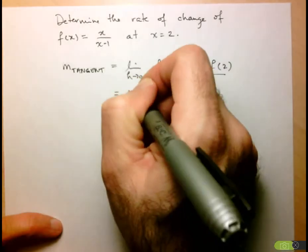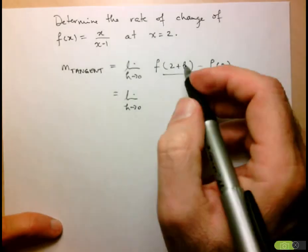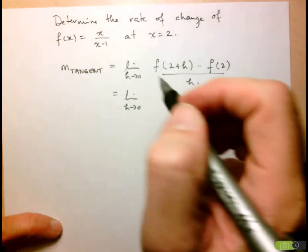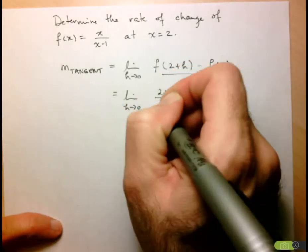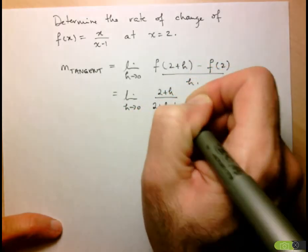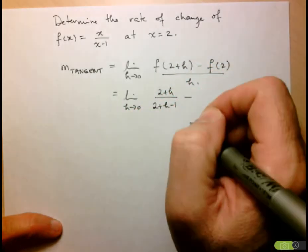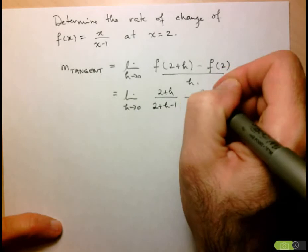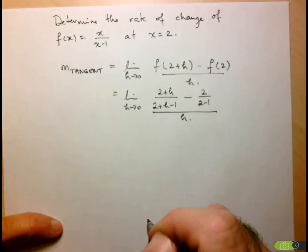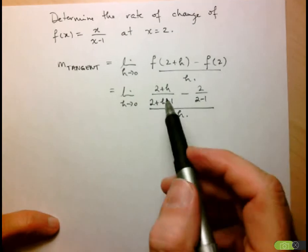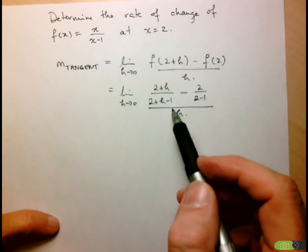Let's input all our information. So f at 2 plus h, just replace x by 2 plus h, so we have 2 plus h over 2 plus h minus 1, then minus f at 2, so 2 over 2 minus 1, all over h. We want to know what happens to this expression as h approaches 0.